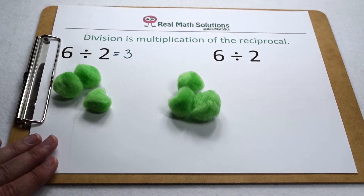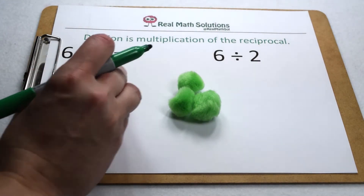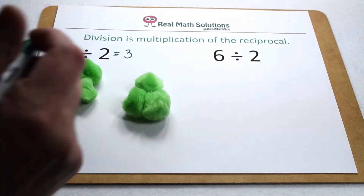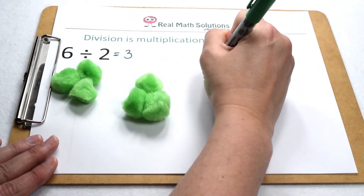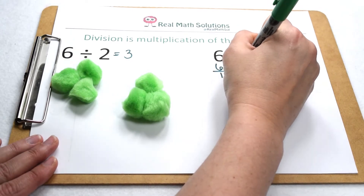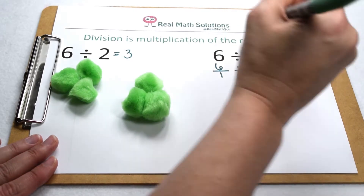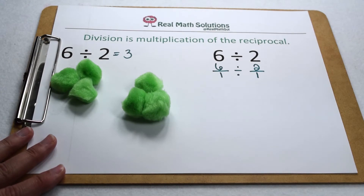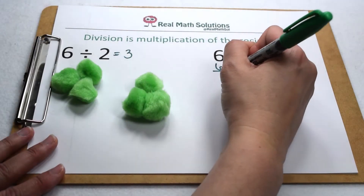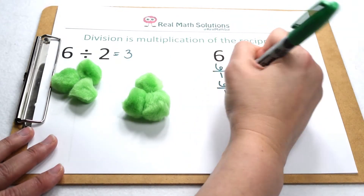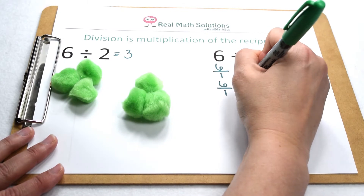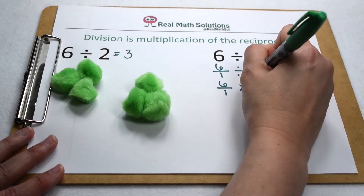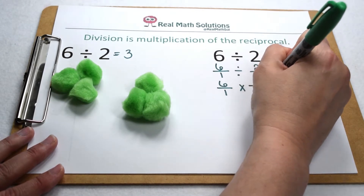Let's think about that in terms of fractions. Every whole number can be turned into a fraction by giving it a denominator of 1. So I can rewrite this problem as 6 over 1 divided by 2 over 1. When we work with fractions, we don't really divide — we multiply by the reciprocal. So our dividend of 6 stays the same, division becomes multiplication, and we take the reciprocal of our divisor. So 2 over 1 would become 1 half.